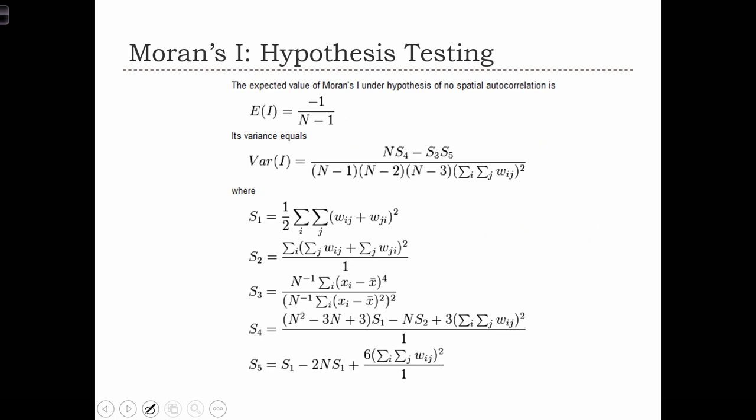But here we have the expected value of Moran's I under the hypothesis of no spatial autocorrelation. And remember before I said that Moran's I equal to 0 implies no autocorrelation. But really, the truth is that Moran's I can only equal 0 if n, if the sample size, is infinitely large.